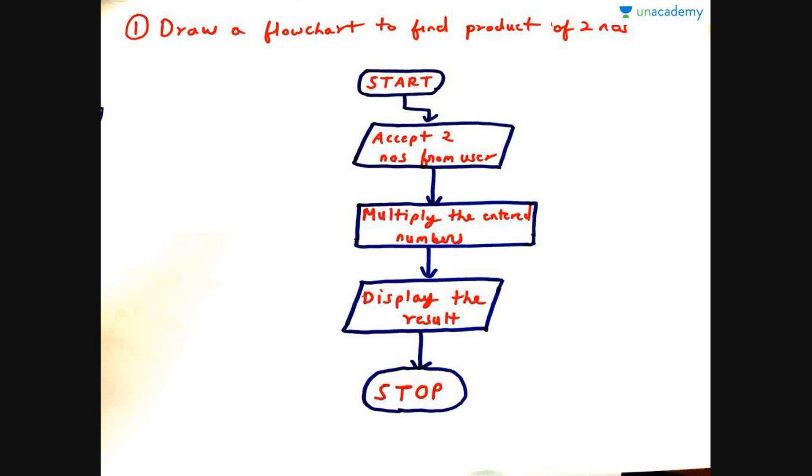Now the homework for you all is to write an algorithm and flowchart for accepting and adding two numbers. We did it for the product. Now you have to do it for addition of the two numbers. Thank you. Hope you have enjoyed the lecture. If you have any doubts kindly mention in the comments below. Thank you.